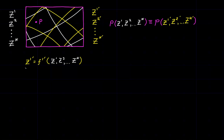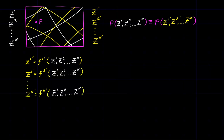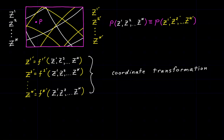To do a full coordinate transformation we're going to have to have similar functions for each of these Z-prime coordinates. A set of functions like this taken collectively is what we call a coordinate transformation. It gives us the ability to transform from the unprimed system to the primed system. If we know all of the individual coordinate values for point P in the unprimed system, we simply substitute them into each of these multivariable functions, and after performing the calculations we arrive at the individual values for the coordinates in the prime system.